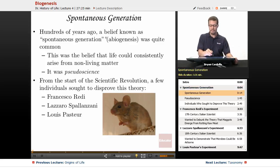Hundreds of years ago, a belief known as spontaneous generation or abiogenesis was quite common. When you put an A in front of a word like biogenesis, it means not that, like when you say something's atypical or asexual, not typical, not sexual. So abiogenesis means life is not coming from life.